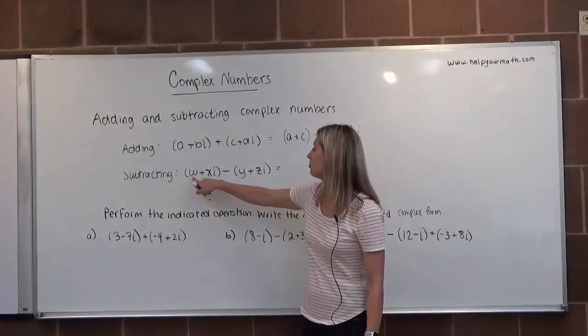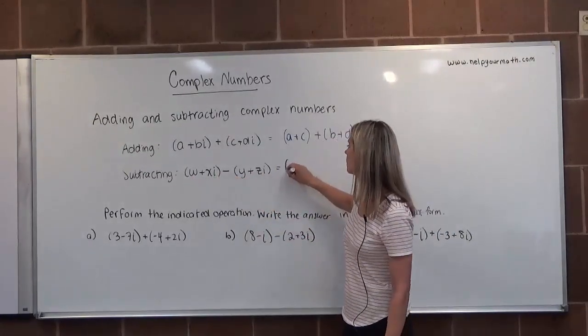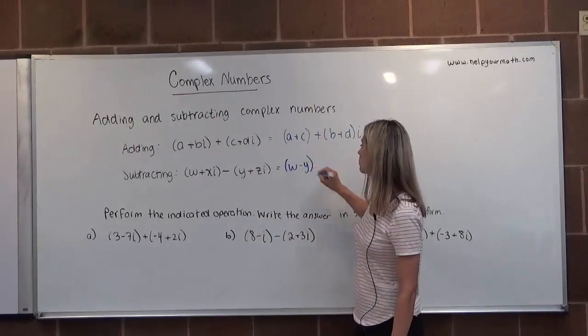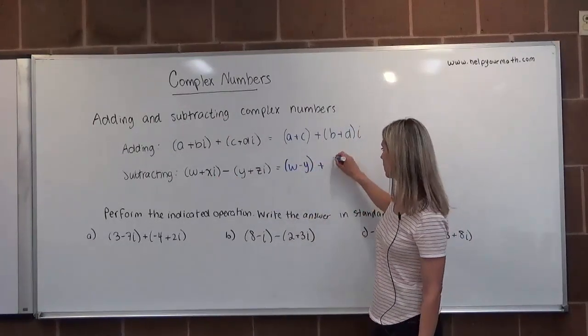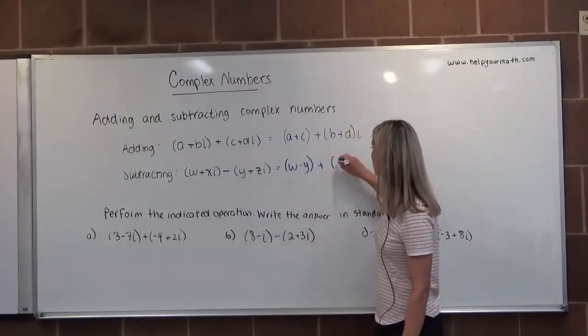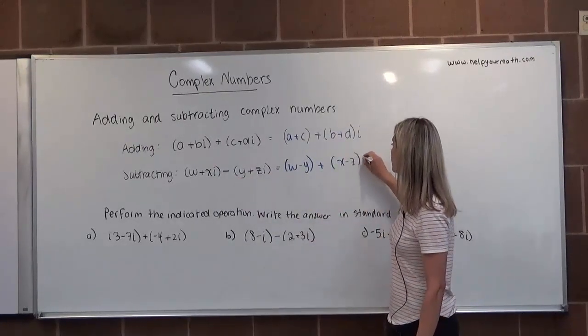So then if we were subtracting, it would be W minus Y. That's the real parts. We would subtract the real parts and we would subtract the imaginary parts. So it would be X minus Z times I.